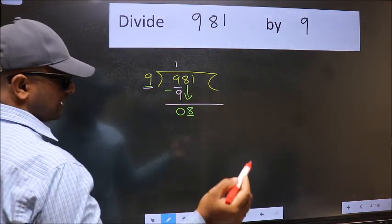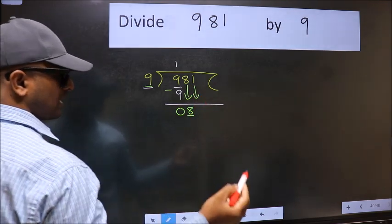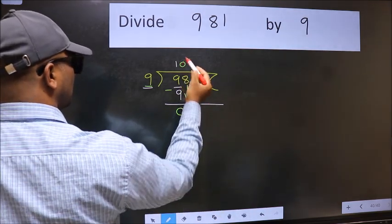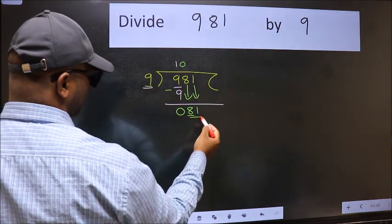So we should bring down the second number. And the rule to bring down the second number is we should put 0 here. Then only we can bring this number down. Now 81.